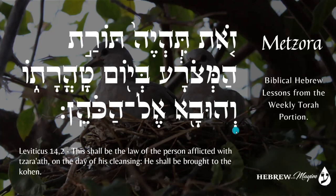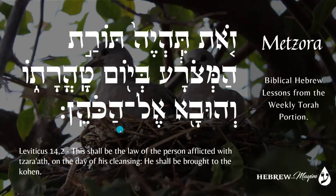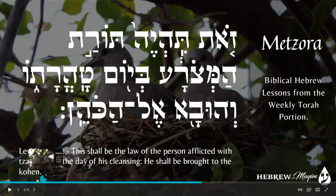Then we have a Vav with a Sheva which says Ve, and a He with a dot in the middle — Hu — so this is Vehu. And then a Vav with a Kamatz and the Aleph says Va — Vehu Va. The Vav means 'and,' and Hu Va means 'he shall be made to come' — or more commonly in English, 'he shall be brought.' Then we have El again, which means 'to,' and Ha again, which means 'the.' Then a Kaf with a Cholam which says Ko, and a He with an Etzera which says He, and Nun Sofit — so this is Hen — HaKohen. Ha is 'the,' Kohen is 'priest.' So: 'and he shall be brought to the priest.'